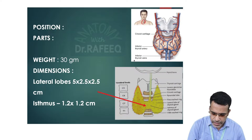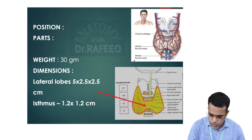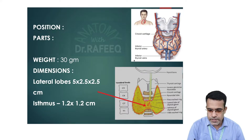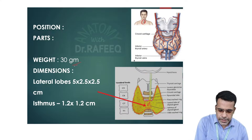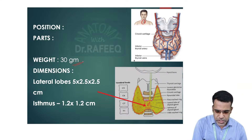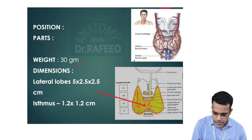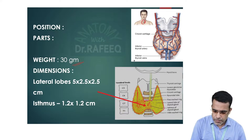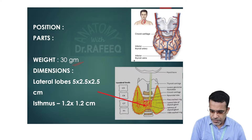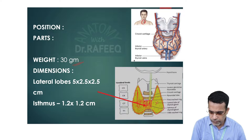This butterfly-shaped gland has two parts: on the right side we have the right lobe and on the left side we have the left lobe. These two lobes are connected by a middle part called the isthmus of the thyroid gland. It weighs around 30 grams in an adult, with a height of 5.2 centimeters, width of 5.2 centimeters, and 2.5 centimeters thickness. The isthmus is a small quadrilateral part connecting the two lobes.